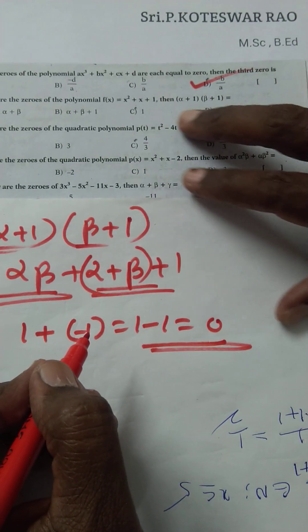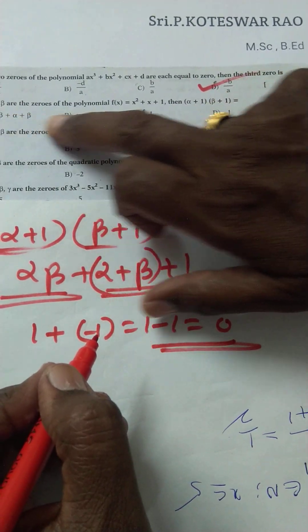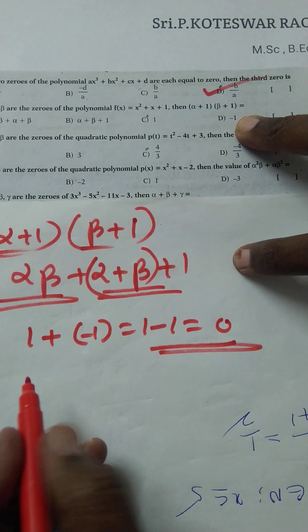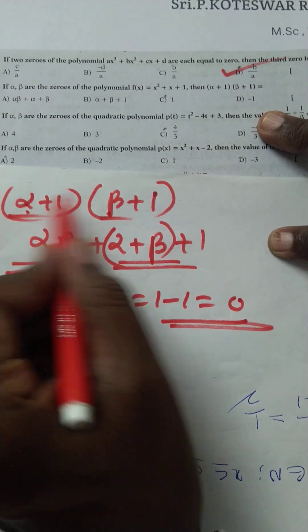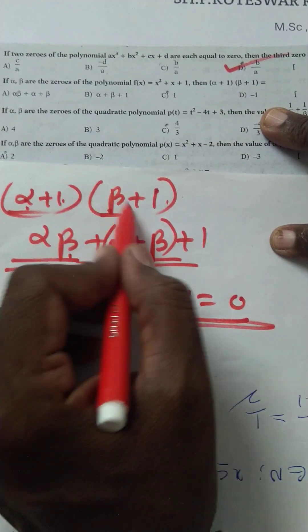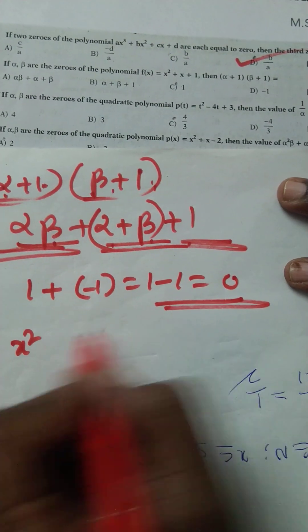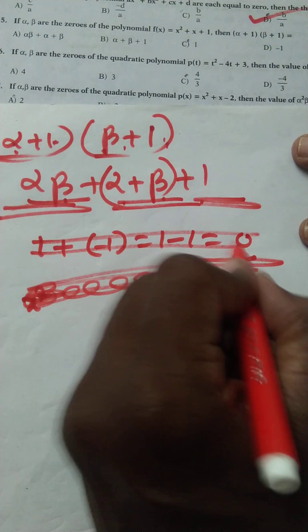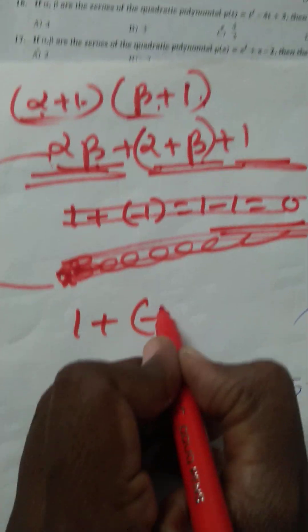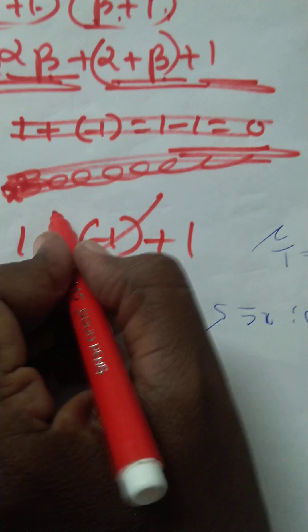But that is not the answer. Observe again — alpha·beta + alpha + beta + 1 into 1. Alpha·beta means 1, plus minus 1 plus 1; the minus 1 and plus 1 cancel, depending on 1. So the answer is 1 — option C is the right option.